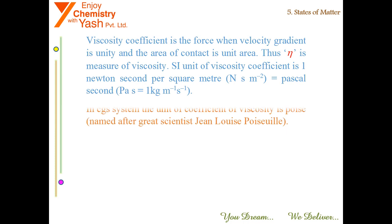Greater the viscosity, more will be the resistance to flow. In CGS system, the unit of coefficient of viscosity is poise, named after great scientist Jean Louis Poiseuille. 1 poise equals 1 g·cm⁻¹·s⁻¹, which equals 10⁻¹ kg·m⁻¹·s⁻¹.